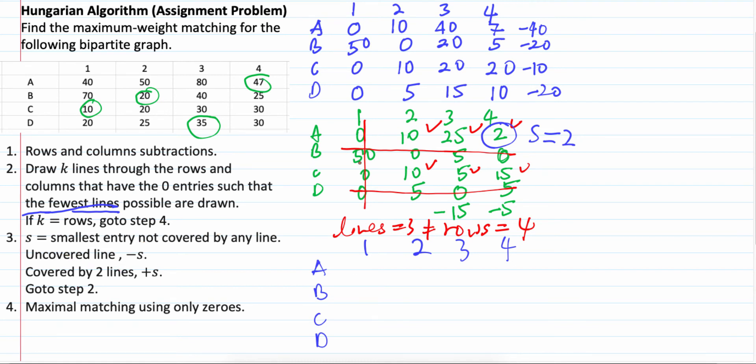So, what we need to do next is for uncovered line minus s, covered by 2 lines plus s, covered by 1 line don't do anything. So, covered by 2 lines is 50 here B1. So, plus 2, makes 52. Covered by 2 lines another one is here, 0 plus 2 you get 2. Covered by 1 line don't do anything, 0, 0. So, you copy again 5, 0. Then 5, 0, 5.